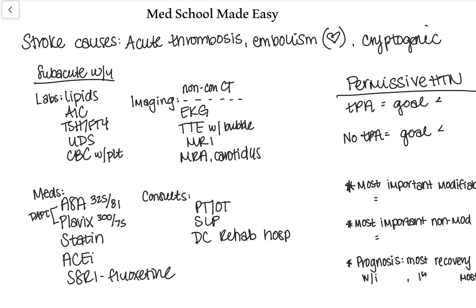The first thing you want to start with is labs. You want to check their lipids, their A1C, TSH, free T4, a urine drug screen, and a CBC with platelet count. All of these are significant because they will help you separate out any sort of etiology — whether they have hyperlipidemia putting them at a hypercoagulable state, or drugs causing strokes, or an increased or decreased platelet count causing either ischemic or hemorrhagic strokes. Those labs can definitely give you a clue as to why this happened.